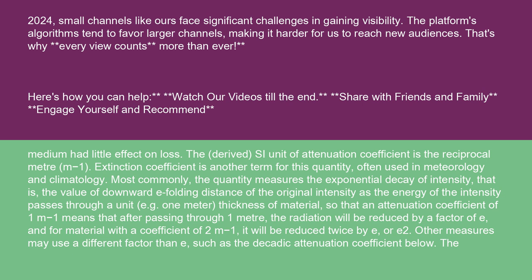The derived SI unit of attenuation coefficient is the reciprocal meter, m⁻¹. Extinction coefficient is another term for this quantity, often used in meteorology and climatology. Most commonly, the quantity measures the exponential decay of intensity — that is, the value of downward e-folding distance of the original intensity as the energy passes through a unit (e.g. 1 meter) thickness of material, so that an attenuation coefficient of 1 m⁻¹ means that after passing through 1 meter,